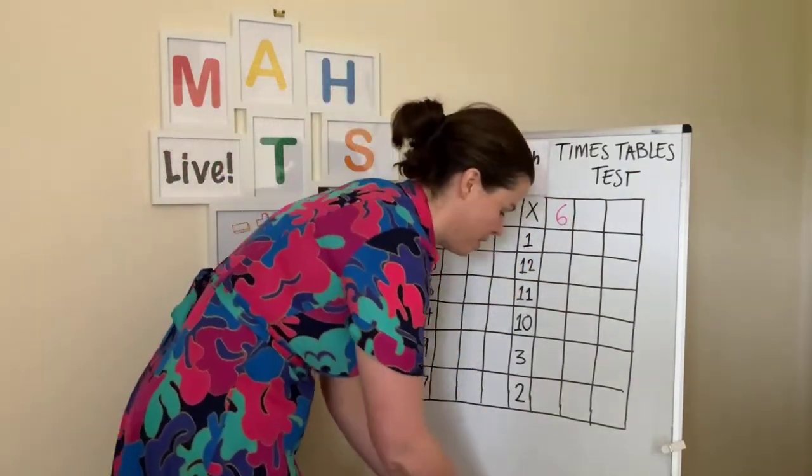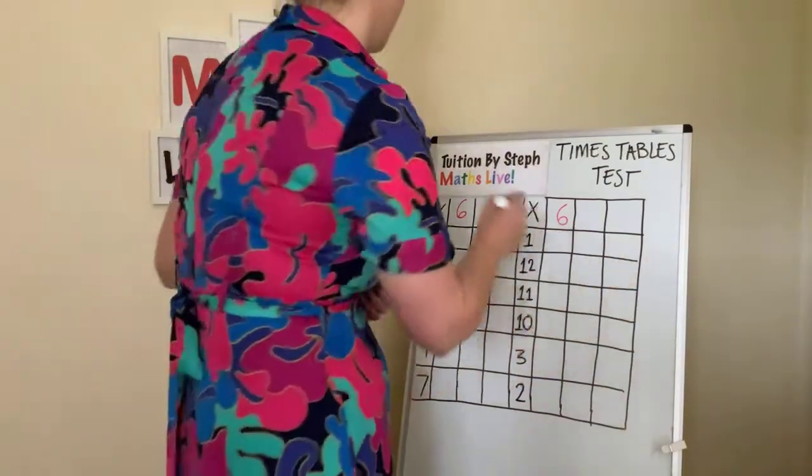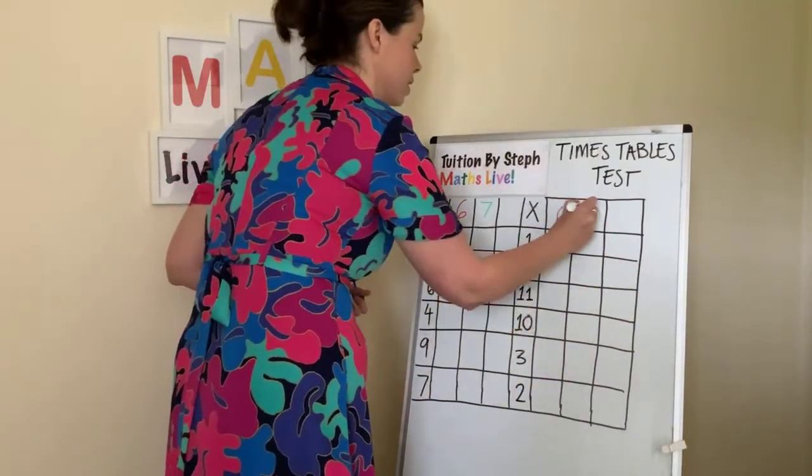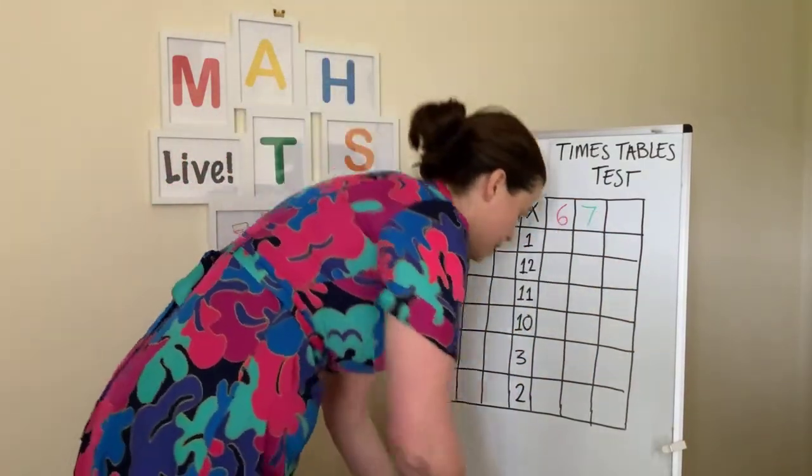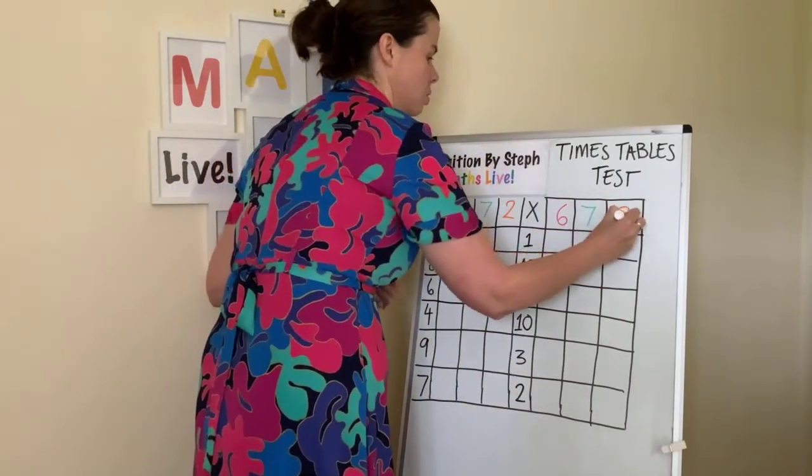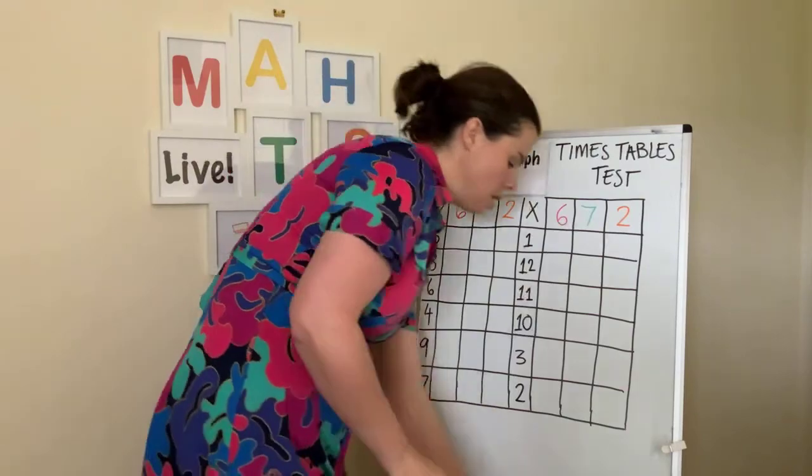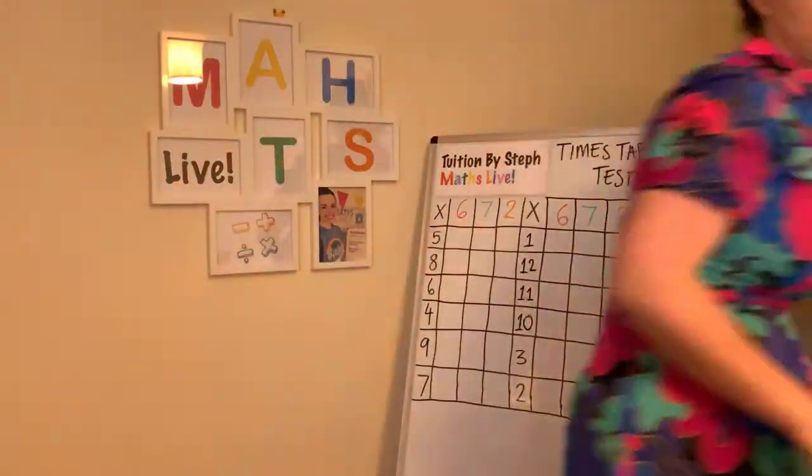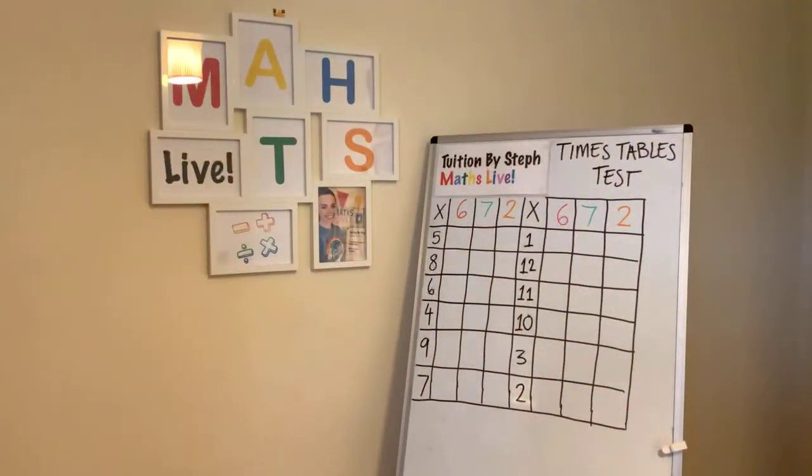First of all, times tables for today are the sixes. So you can go now for our sixes. We have got our sevens. And finally, we have got our twos. So those are your times tables for this morning. I'm going to wipe the lights on so you can see a bit better. Off you go.